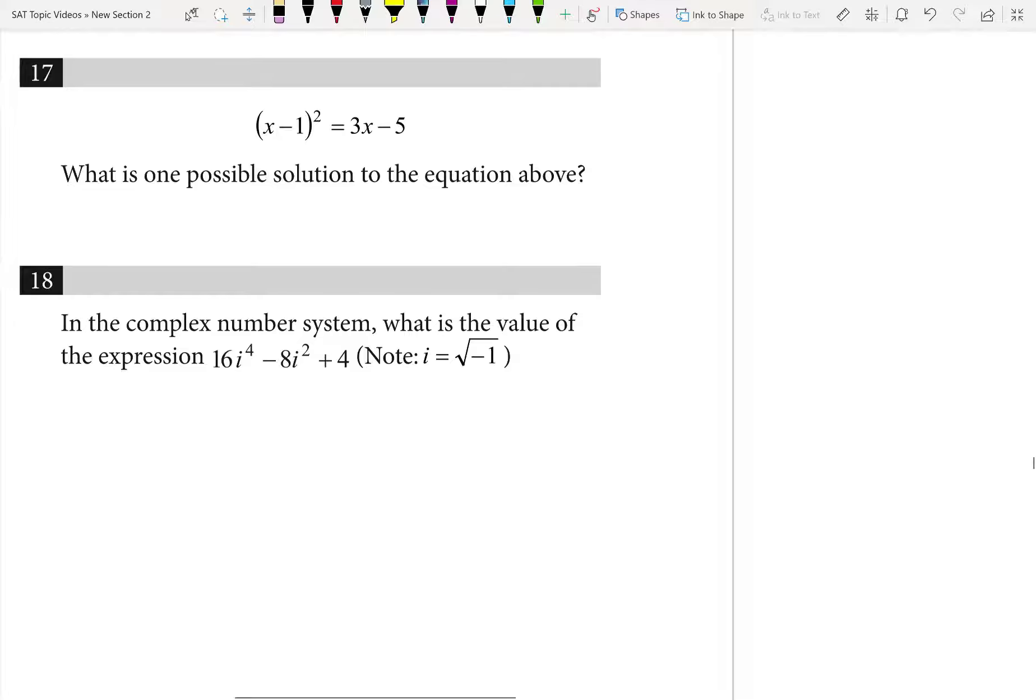And I can already say with pretty good certainty that it's going to end up being a factoring problem because of the squared in the problem. So when we foil that out, we're going to get x squared minus 2x plus 1 equals 3x minus 5.